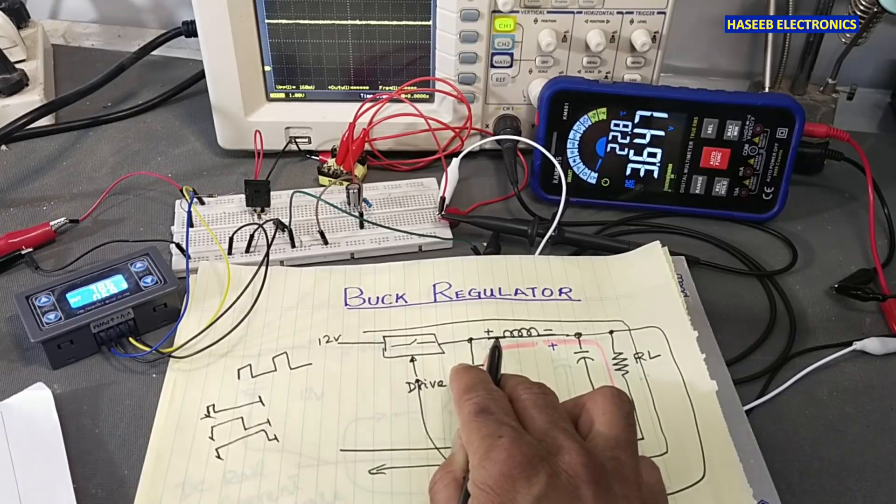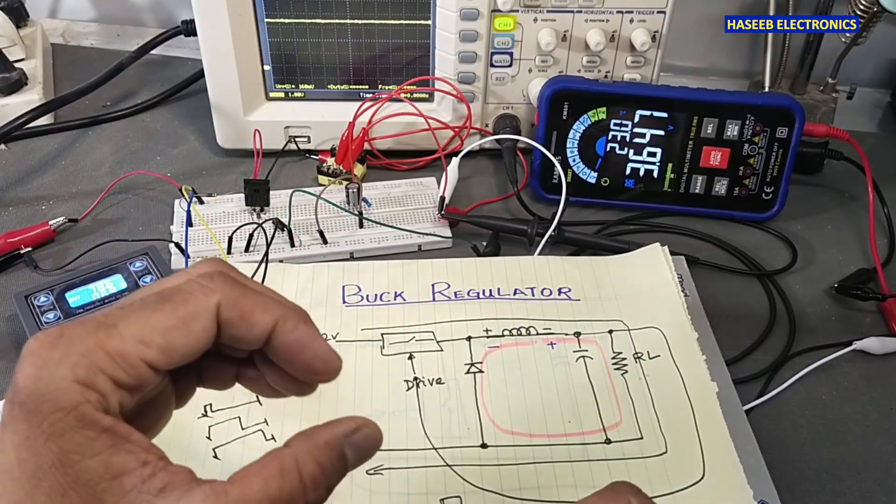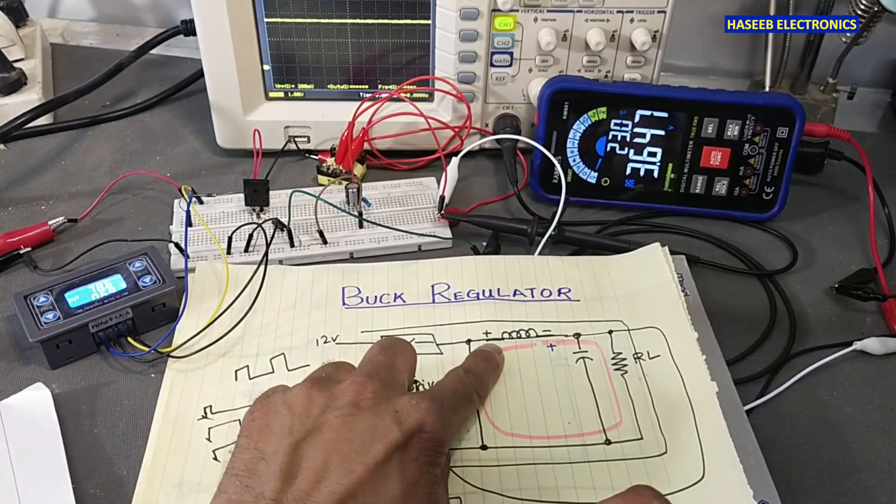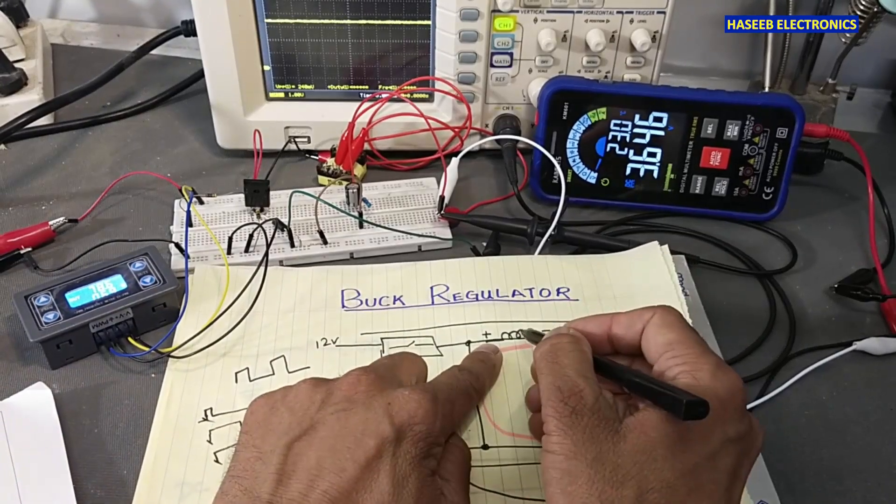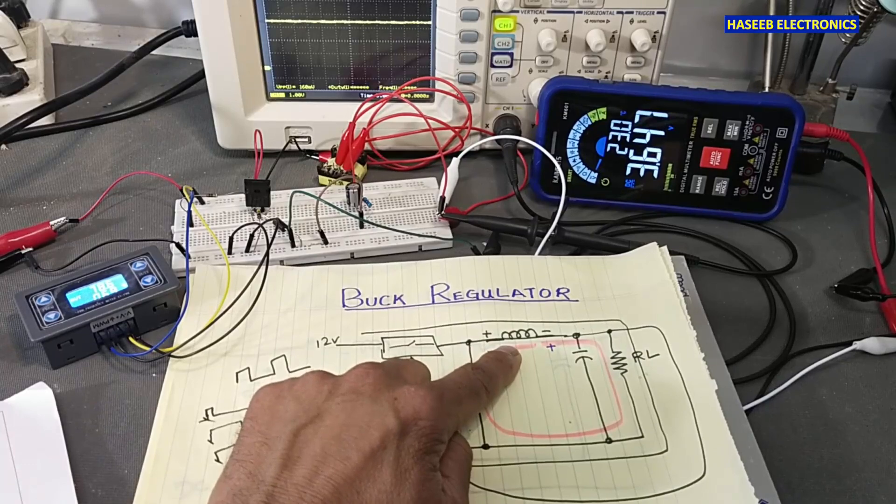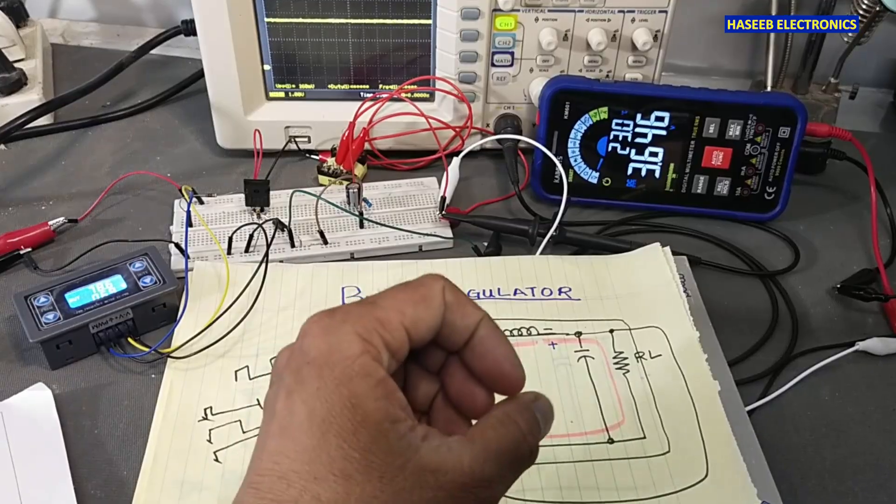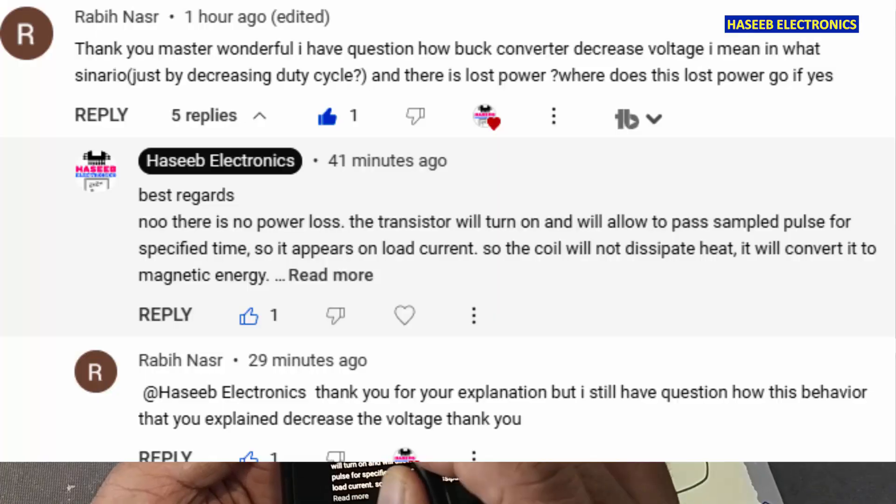This inductor will hold it, will oppose the current flow. Why? Because it has inductive reactance, and when current flows in inductor it creates magnetic field.